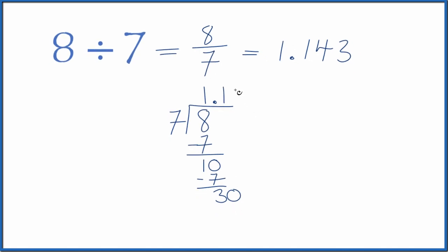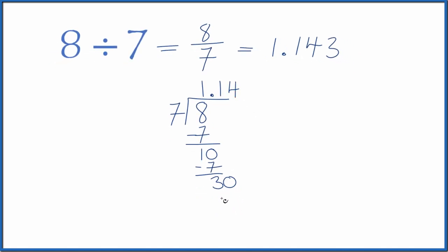Call it 30. Move over 1. 4 times 7 is 28. Subtract, we get 2. Call it 20. And 2 times 7, that's 14.